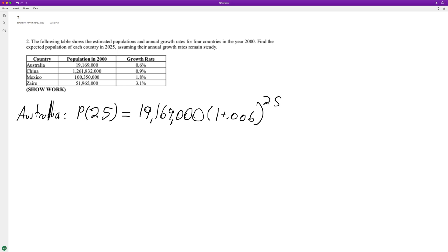raised to the 25, and when we do that we're rounding to the nearest whole number. When we round we end up with 22 million 261,221 people.